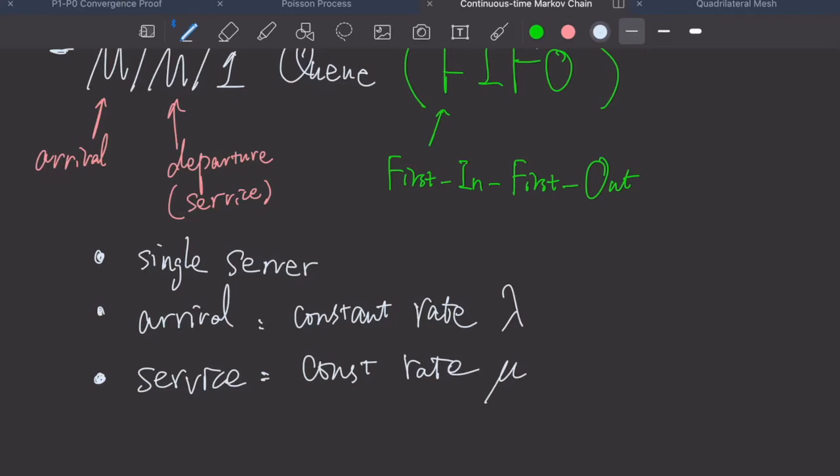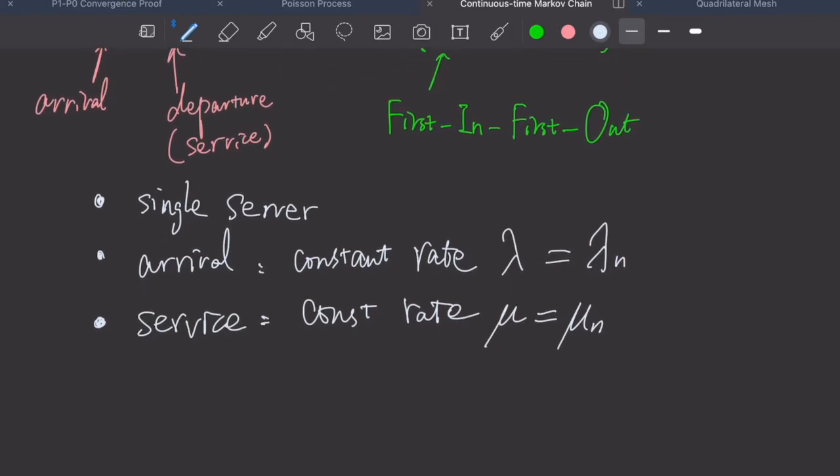Apparently, this lambda is our lambda_n in previous video, and this mu is our mu_n in previous video. So lambda and mu, they don't depend on the number of customers in this queue.